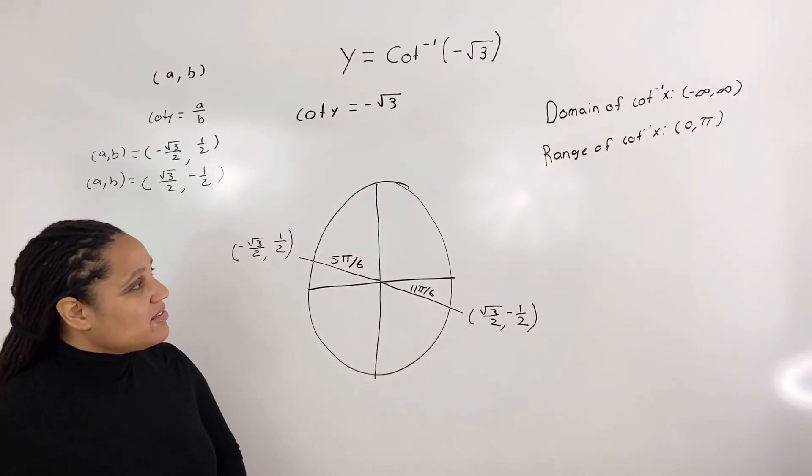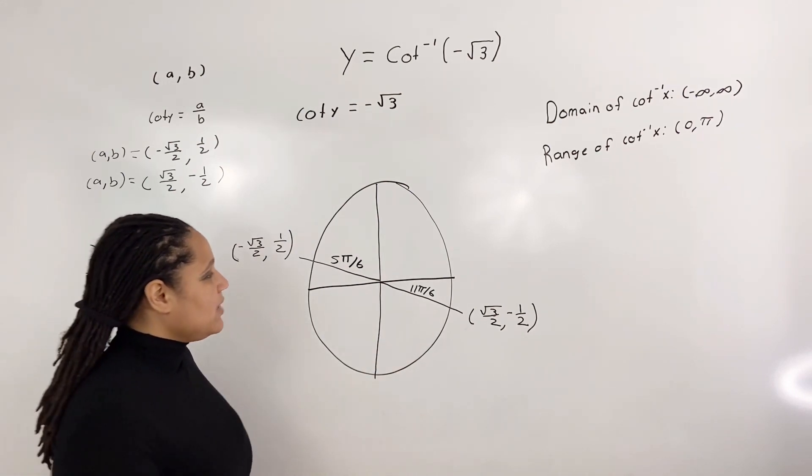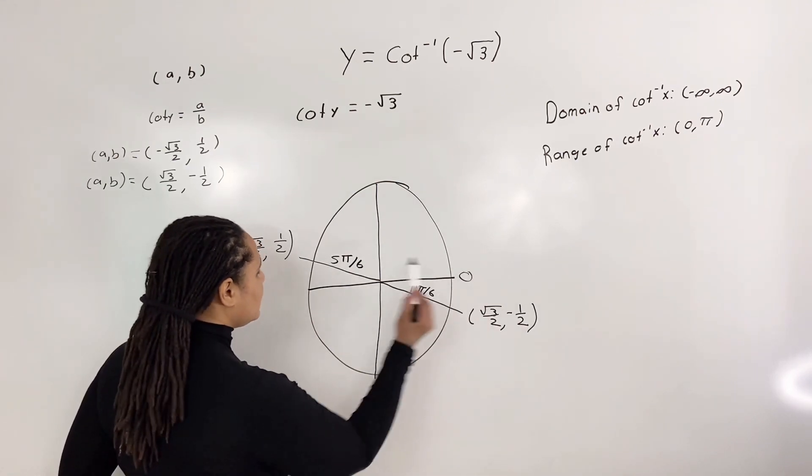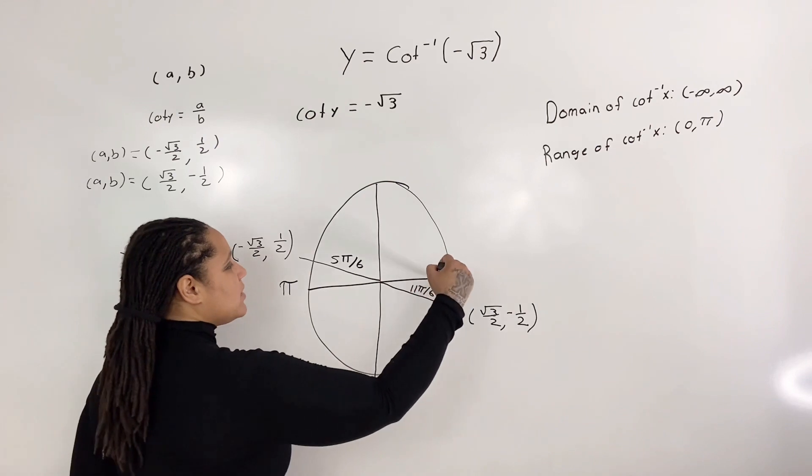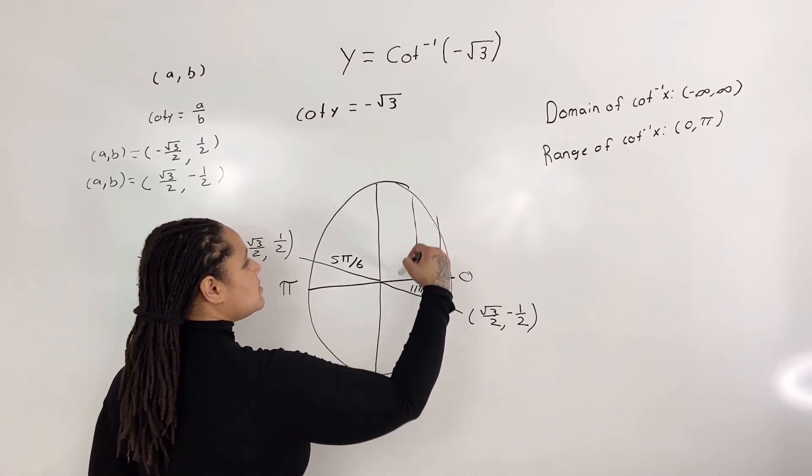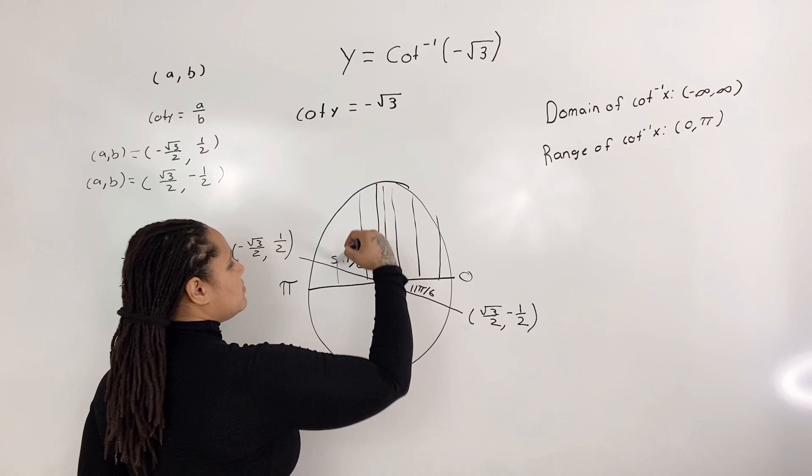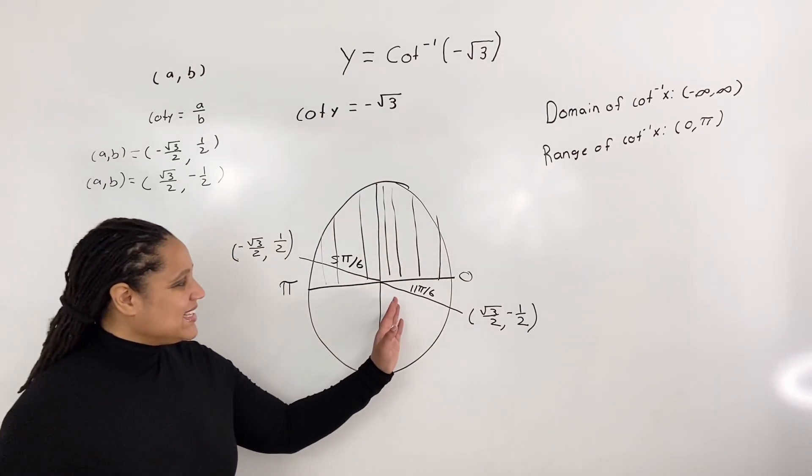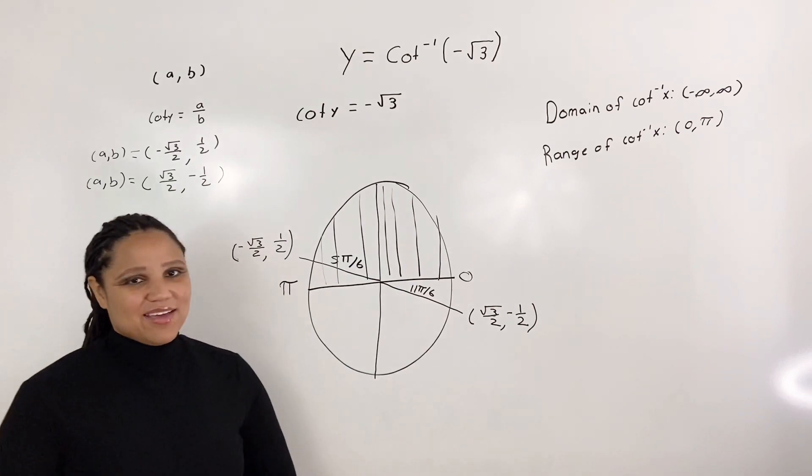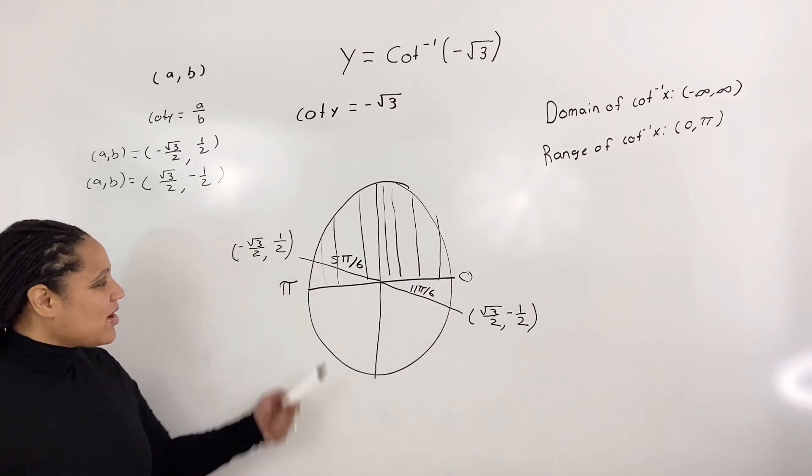So observing the range from 0 to pi, we have 0 here and we have pi here. So this tells us that we can only use the upper region of the unit circle.